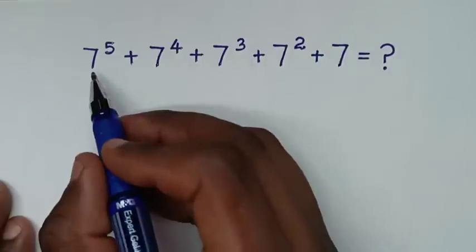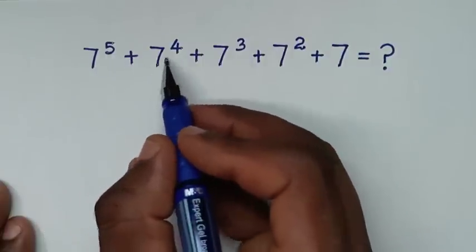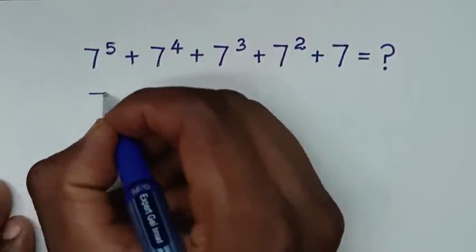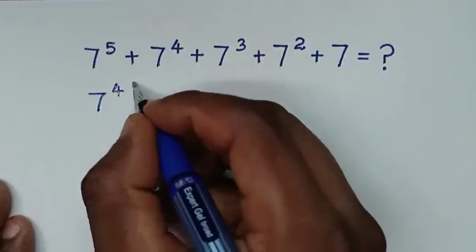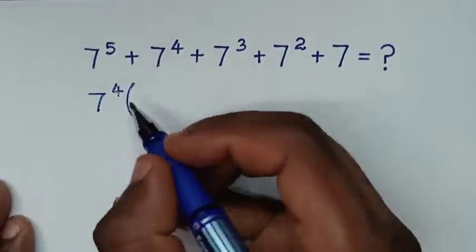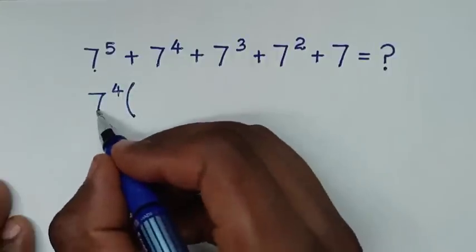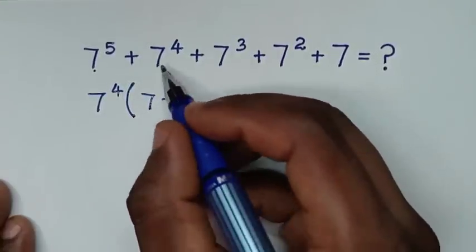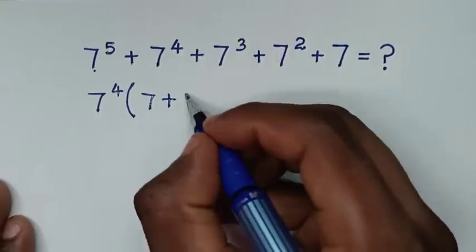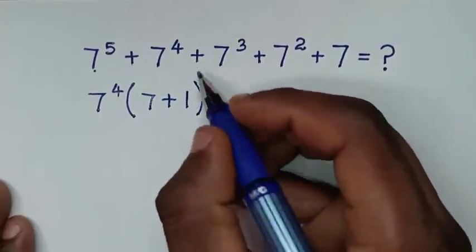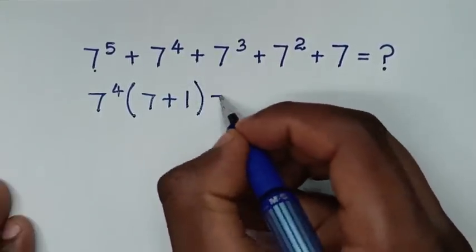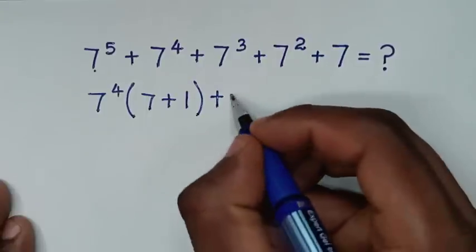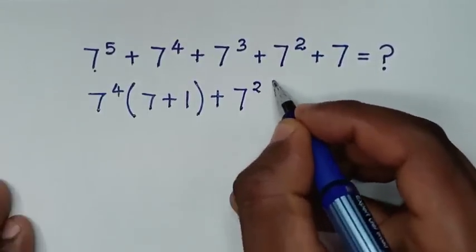Now, from here 7 power 5 plus 7 power 4 — 7 power 4 is common. So we will take 7 power 4 out of bracket, then 7 power 5 divided by 7 power 4 is 7, then plus 7 power 4 divided by 7 power 4 is 1. Then from here 7 power 3 plus 7 power 2 — 7 power 2 is common.